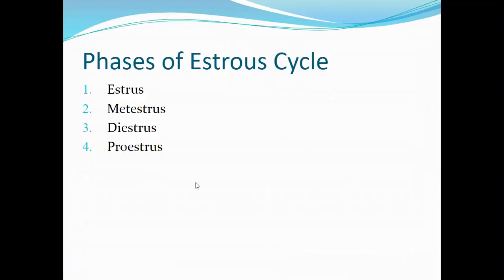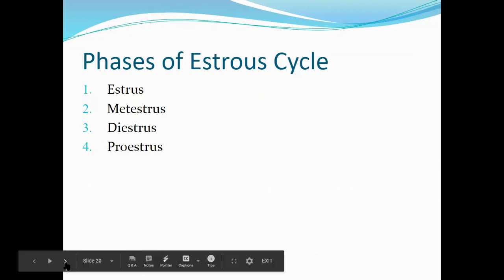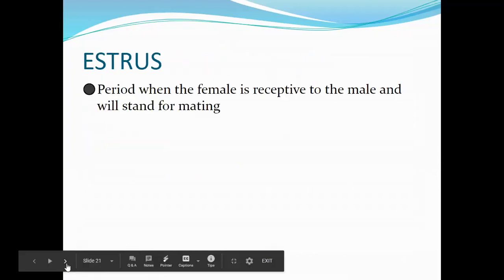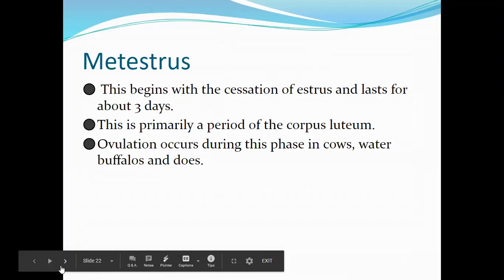Now we go to the four phases of the estrus cycle: estrus, metestrus, diestrus, and proestrus. Estrus is the period wherein the female is receptive to the male and will stand for mating. Metestrus begins with the cessation of estrus and lasts for about three days — this is primarily the period of the corpus luteum — and this is where cows, buffaloes, and does will ovulate.